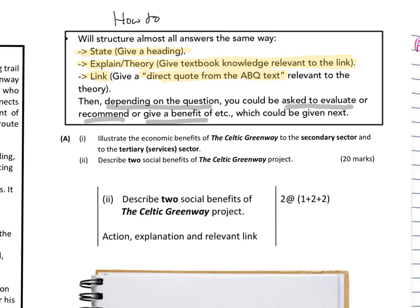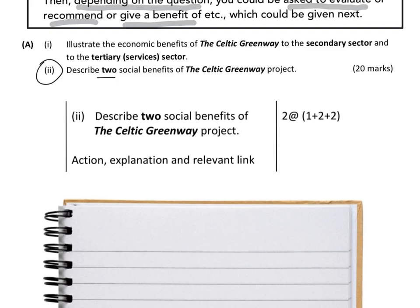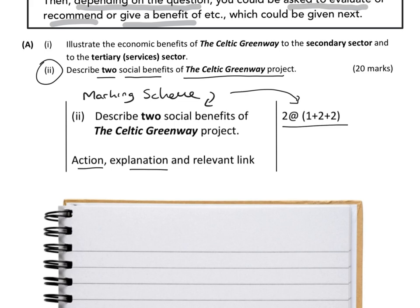We're going to look at part two from 2018: 'Describe two social benefits of the Celtic Greenway project.' The marking scheme is two points at one plus two plus two — you get one mark for stating something, two for developing and giving an explanation, and two for giving a relevant link from the text.